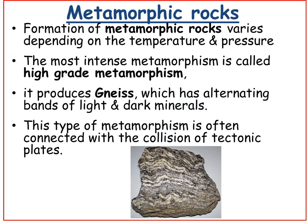During the formation of metamorphic rocks, the way in which it's formed depends on the temperature and pressure it's subjected to. The most intense metamorphism is called high-grade metamorphism, and it produces the stone gneiss, which has alternating bands of light and dark materials. This type of metamorphism is often connected with the collision of tectonic plates.